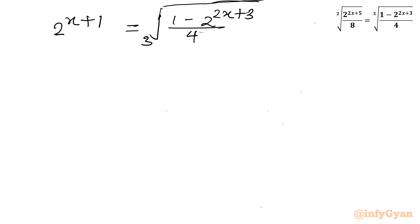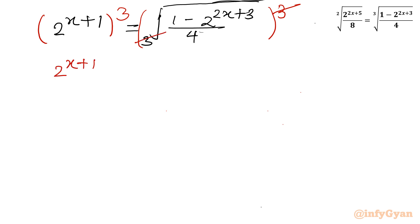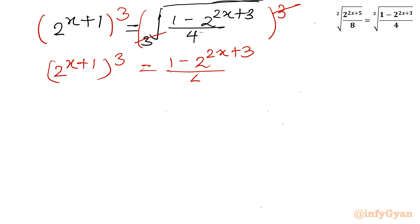Now let us cube both sides of this equation. Cubing both sides cancels the cube root on the right, leaving 2^(x+1) cubed equals 1 minus 2^(2x+3)/4. I will now multiply both sides by 4, cancelling the denominator on the right-hand side.